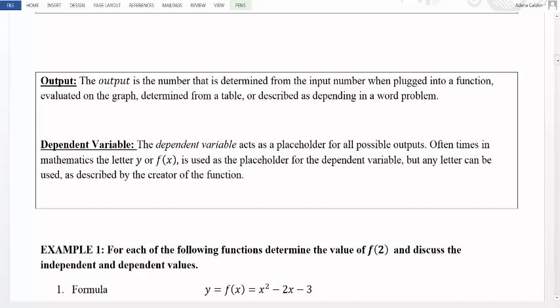The placeholder that we use for the output variable is called the dependent variable because it depends on what you input. The dependent variable acts as a placeholder for all possible outputs. Oftentimes in math, we use the letter y, or we use f(x) as a placeholder for the dependent variable. But again, since it's a placeholder, any letter can be used as described by the creator of the function.